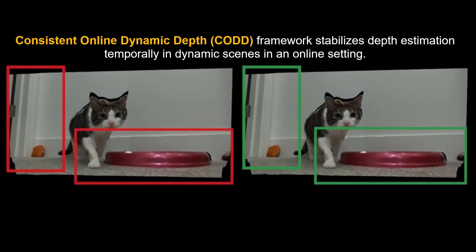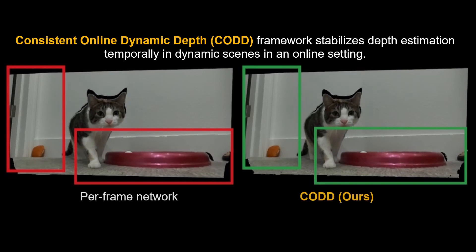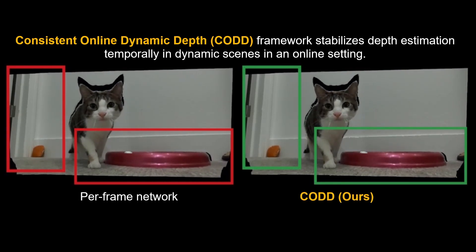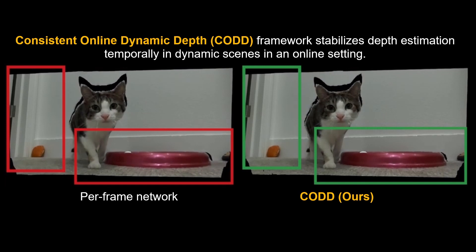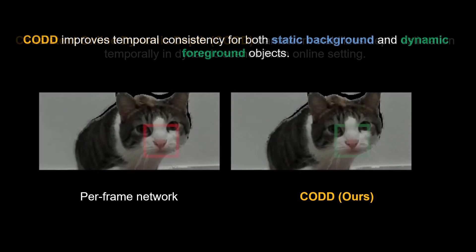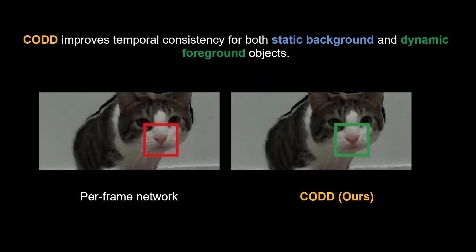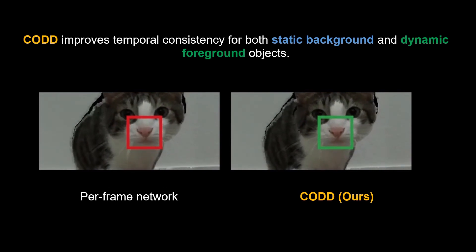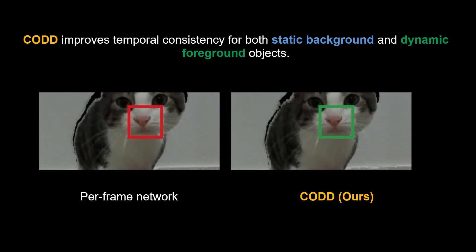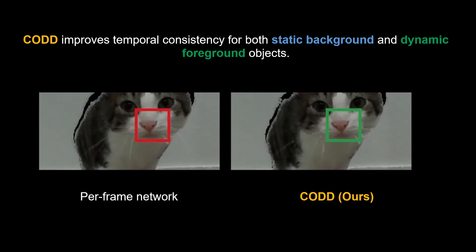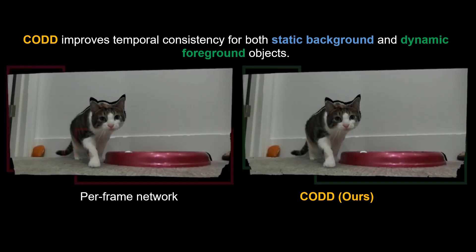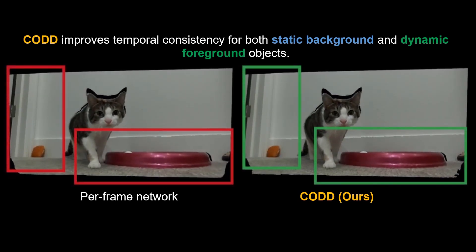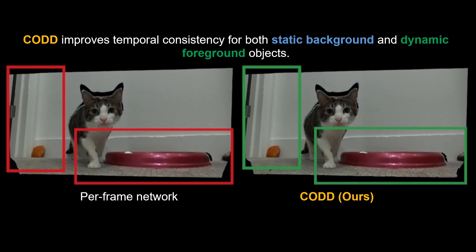Therefore, we present the Consistent Online Dynamic Depth Framework, or COD in short, to stabilize depth estimation for video use cases. Below, we show a comparison between the per-frame network on the left and COD on the right. COD not only stabilizes the static background, such as the wall, but also the dynamic foreground object, such as the cat.